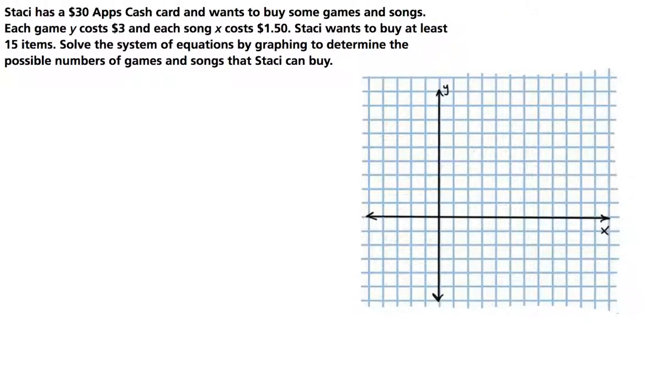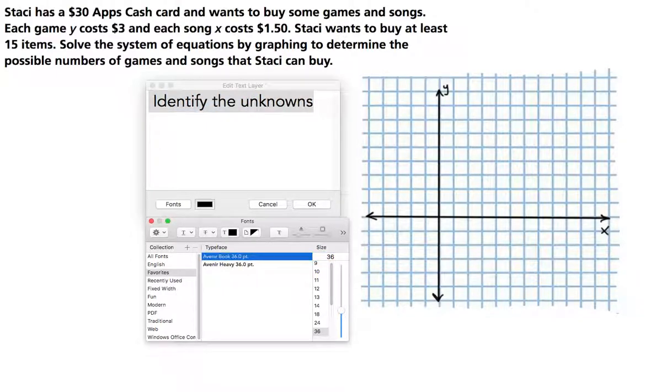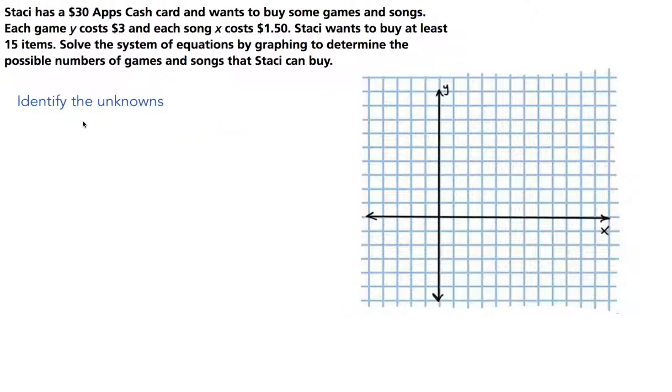One of the first things that needs to be done is to identify the unknowns. The purpose of this is that when solving a word problem, deciphering through some of the information can be confusing. So if you can identify what you're trying to find, then it makes things a little bit clearer.